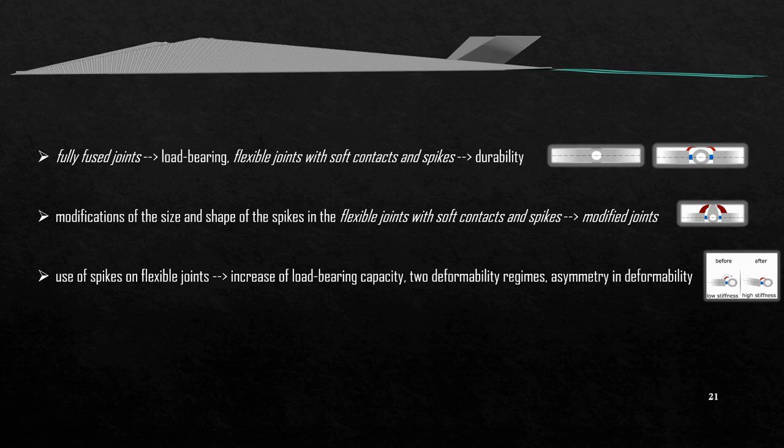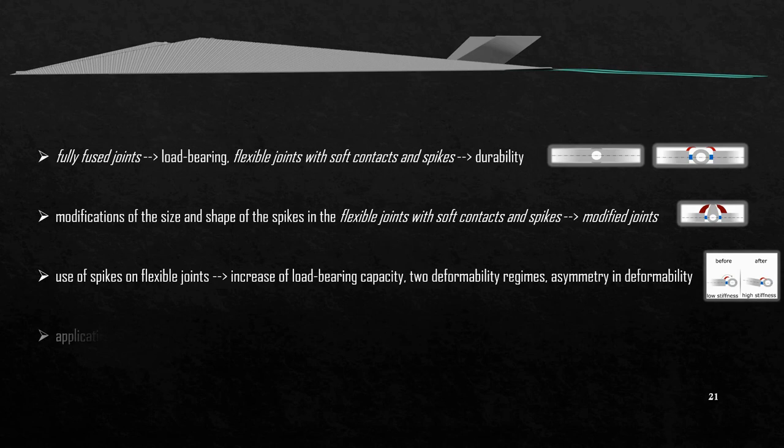And finally, the application of our bio-inspired joints into the design of a diamond kite was just an example to demonstrate the potential of the joints in practice. Then, the use of flexible joints in general and spike-containing joints in particular could be a universal solution for developing load-bearing yet durable engineering structures.